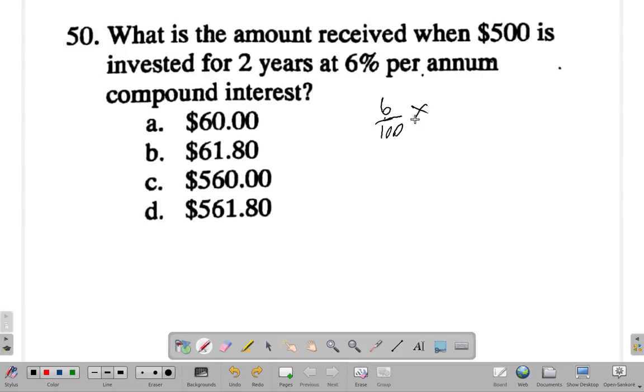So 100 goes into 500 five times, 5 times 6 is 30. So you would get $30 in the first year. Now if it was simple interest, you'd get another $30 in the second year, which would be $560 flat.